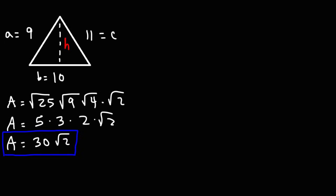So let's get a decimal answer for that. The square root of 2 is 1.414213 and some other numbers times 30. This gives us a decimal value of approximately 42.4264.